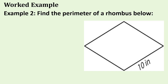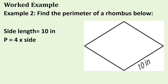Example 2: Find the perimeter of a rhombus. Side length equals 10 inches. Formula: P = 4 times side. Perimeter equals 4 times 10 inches. 4 times 10 equals 40. The answer is 40 inches.